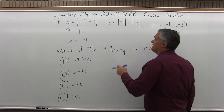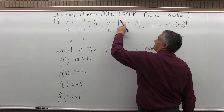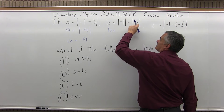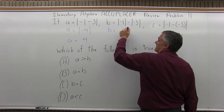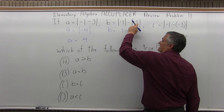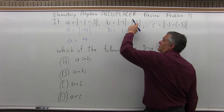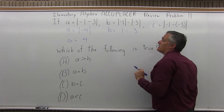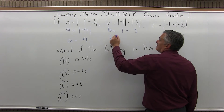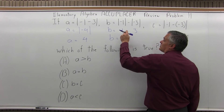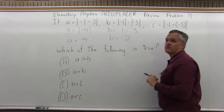Now let's figure out B. B equals the absolute value of negative 1 minus the absolute value of negative 3. The absolute value of negative 1 is positive 1, and I subtract the absolute value of negative 3, which is positive 3. In both cases, I kept the number the same but made sure they were positive. So 1 minus 3 is negative 2 — like being at 1 degree and dropping 3 degrees gives 2 below zero. B equals negative 2.